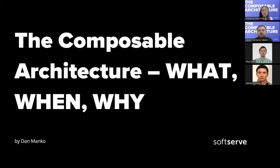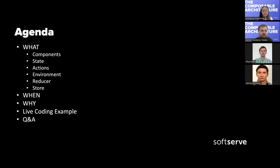Before we start, has anyone worked with this architecture before? On the agenda for today, we have what this architecture is and which components it consists of. There are five key components: state, actions, environment, reducer, and store. We'll discuss when to implement this architecture and why we need it, and we'll also have a live coding example and a Q&A session.